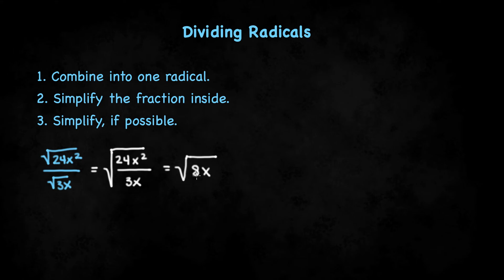This can still be simplified even further as 8 breaks up into 2 times 2 times 2. We take a pair of 2's out in front of the radical. That will leave us with 2 square root of 2x.